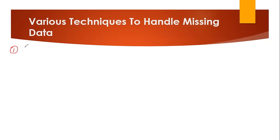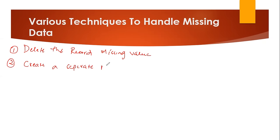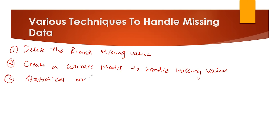We basically have three different techniques for handling missing data. One is to delete the record which has missing values. The second is to create a separate model to handle the missing values. The third technique is using some statistical methods — like mean, median, or mode — to replace the NaN values with something else. We'll also see other considerations beyond just replacing with mean or median.